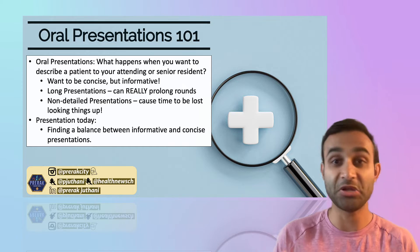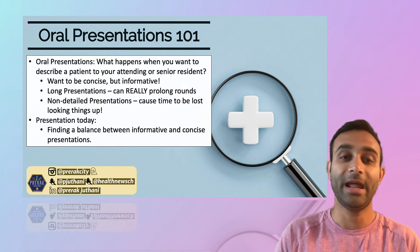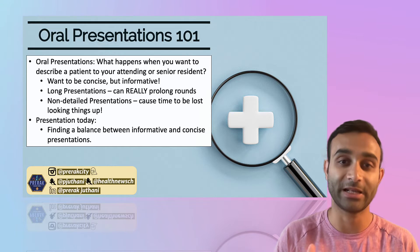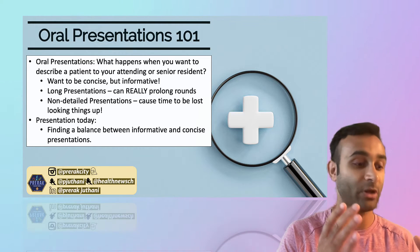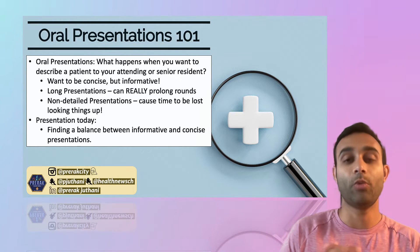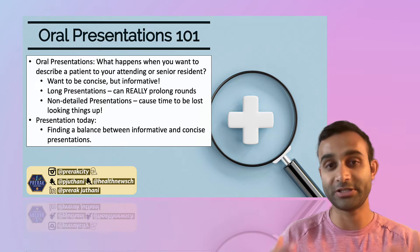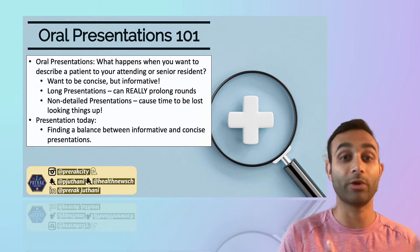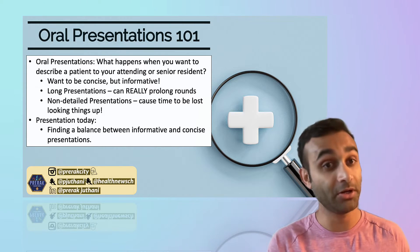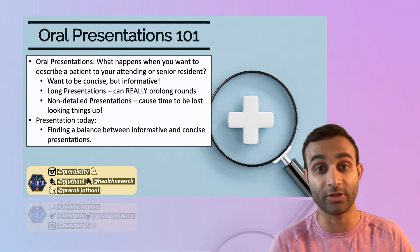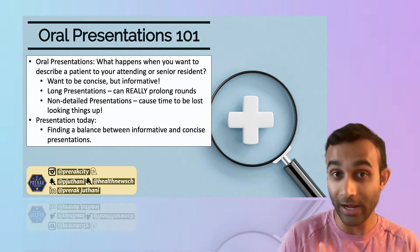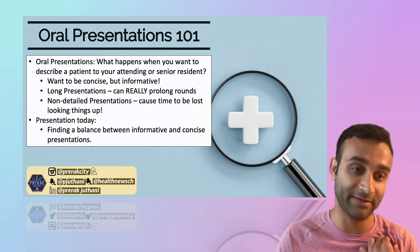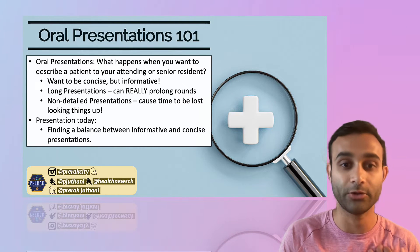You might be wondering how do you even find that sweet spot? The way you find the sweet spot is by trying to tell a story in a very organized fashion. When you're giving an oral presentation, it's similar to almost trying to tell a story about what you think is going on with the patient and why you think we should do what you think we should do. The best way to do it is thinking about it in a very focused approach.